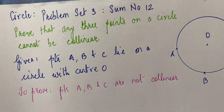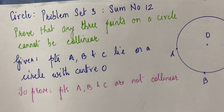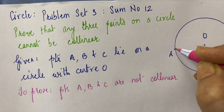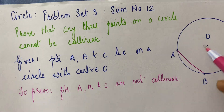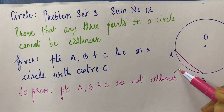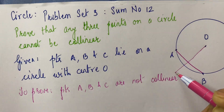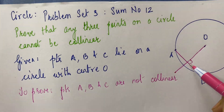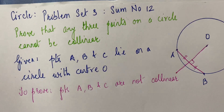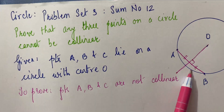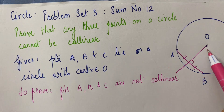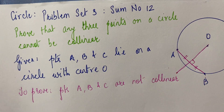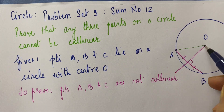If three points are lying on the circle and we join AB, and if you make a perpendicular bisector of AB, it will come out to be somewhat like this. This is a perpendicular bisector. This point O is equidistant from A and B by the perpendicular bisector theorem.